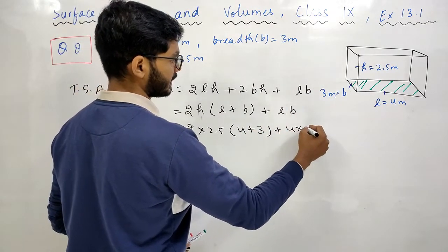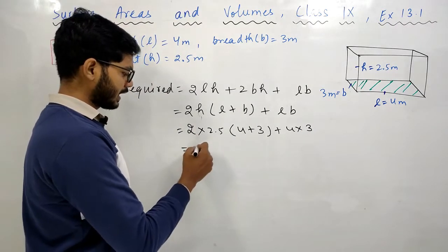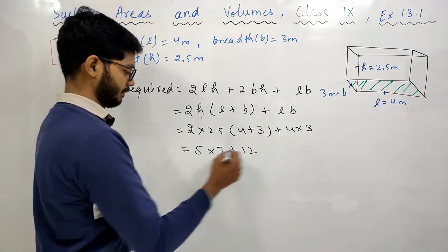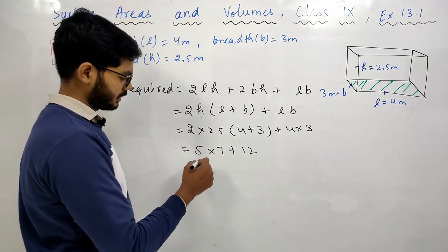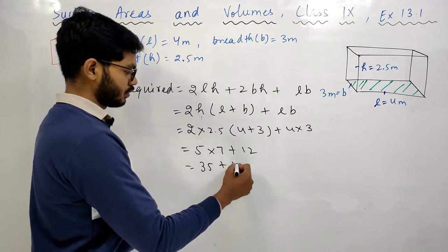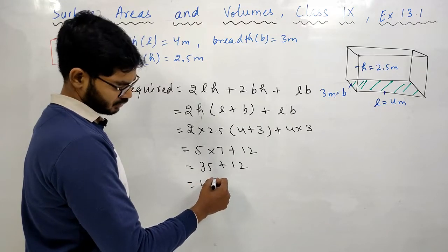Multiplying this gives 5 here, then 7. Plus 4×3 equals 12, and 7×5 equals 35. So 35 plus 12, solving this gives 47 meter square.